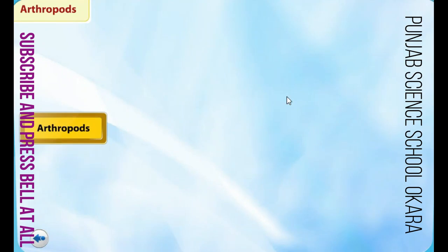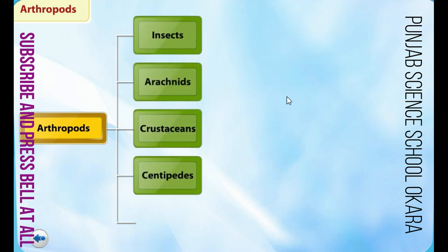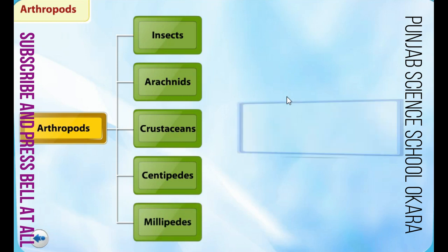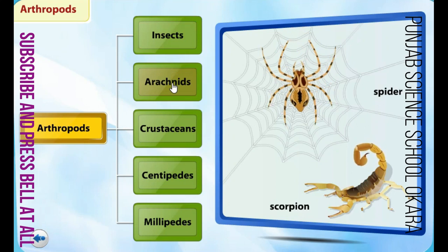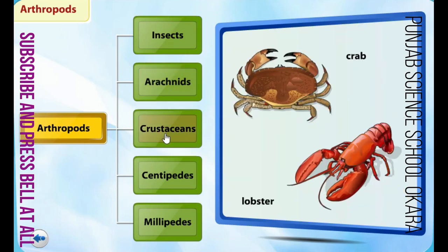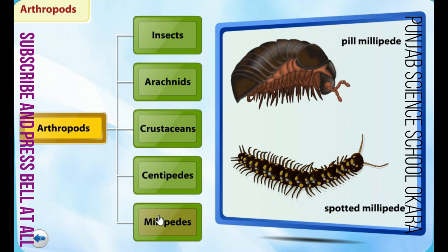Some carnivorous plants like pitcher plants also eat arthropods. Scientists have divided arthropods into five main groups: insects, arachnids, crustaceans, centipedes, and millipedes. Examples include beetles, ants, and grasshoppers for insects; spiders and scorpions for arachnids; crabs and lobsters for crustaceans; earth centipede and stone centipede; and pill millipede and spotted millipede.